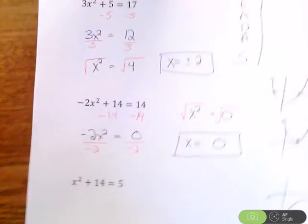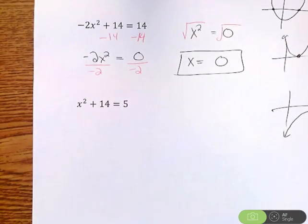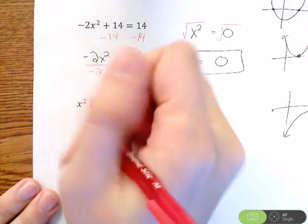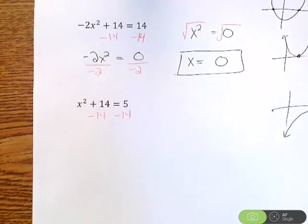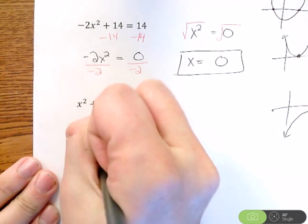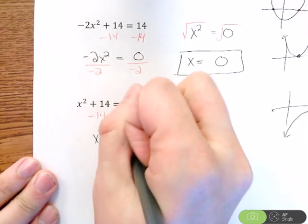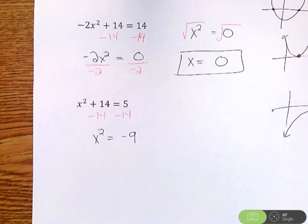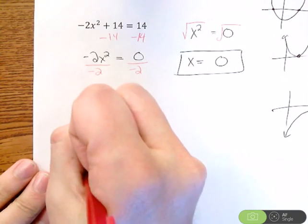So we go on to the next one. x squared plus 14 equals 5. So, again, I want to work the order of operations backwards. I have an x with a square and a plus 14. So the first thing I'm going to do is I'm going to subtract 14 from both sides. And this is going to give me x squared equals 5 minus 14 is negative 9. Now, the next thing I want to do is get rid of that square. So we're going to do a square root.